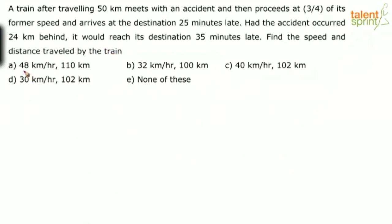The options given are: (A) 48 kilometers per hour, distance 110 kilometers; (B) 32 kilometers per hour, distance 100 kilometers; (C) 40 kilometers per hour, distance 102 kilometers; (D) 30 kilometers per hour, distance 102 kilometers; and (E) none of these.